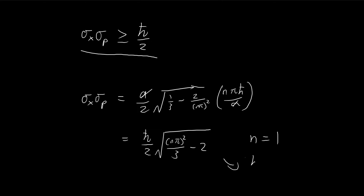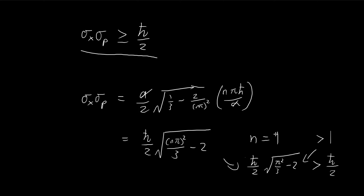When n equals 1, this expression equals π²/3 minus 2. Substituting these numbers into a calculator, this is actually larger than 1. So the whole expression is always larger than ħ/2. For the infinite square well, we have proved that the Heisenberg uncertainty principle is satisfied. When n is larger — 2, 3, or 4 — this only gets larger. Once we prove the expression is larger than 1 for n=1, we know the product is always larger than ħ/2, so the Heisenberg uncertainty principle is satisfied.